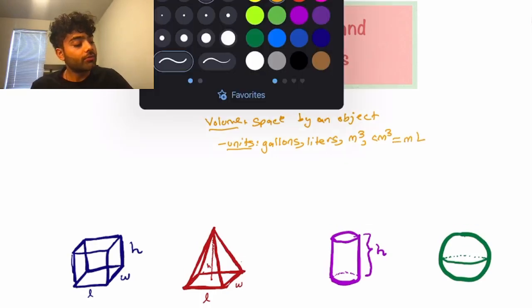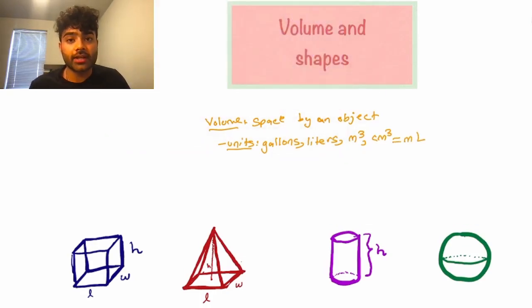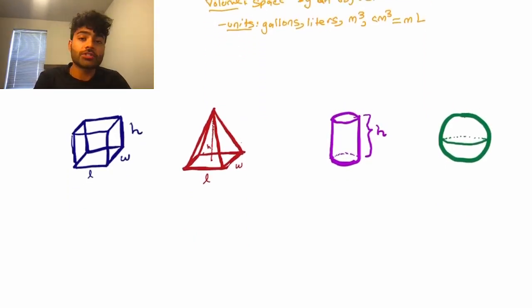So we've gone over volume, we've gone over its units, let's start calculating volumes for some shapes. I have four shapes drawn here. The first one is a rectangular prism. For this, we'll use v sub r, which is equal to the length times the width times the height, the side lengths of the rectangular prism.